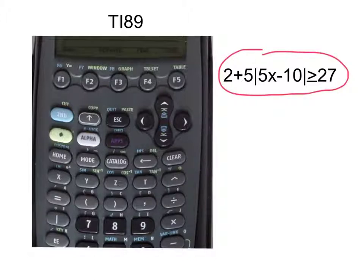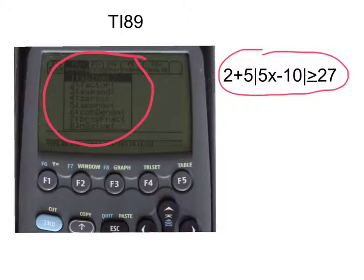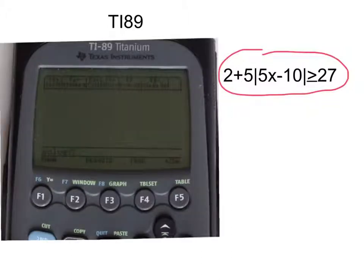To enter this inequality into the calculator, first you are going to hit F2. Then this drop down box drops down, and you want to choose this first one here, solve, by hitting the enter key on the calculator.